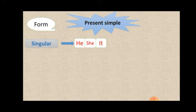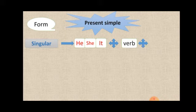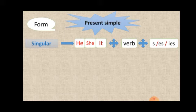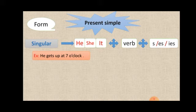This is the subject of Singular. We add to them the verb plus s, es, or ies. Let's see an example. First example: He gets up at 7 o'clock. We add s to the verb get because it's a regular verb. We add s with Singular.